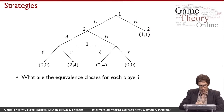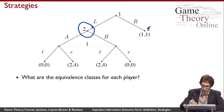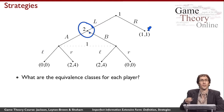Completing the example: what are the equivalence classes for player two? Player two has only one choice node and therefore only one equivalence class.